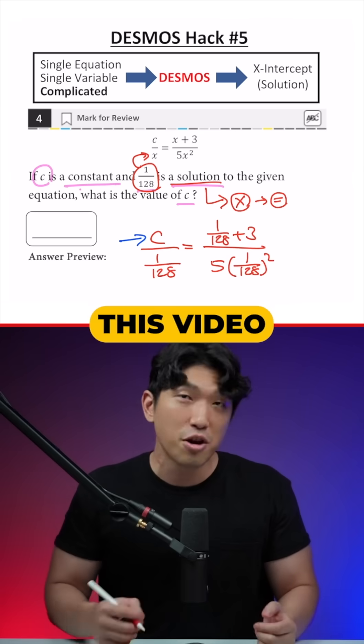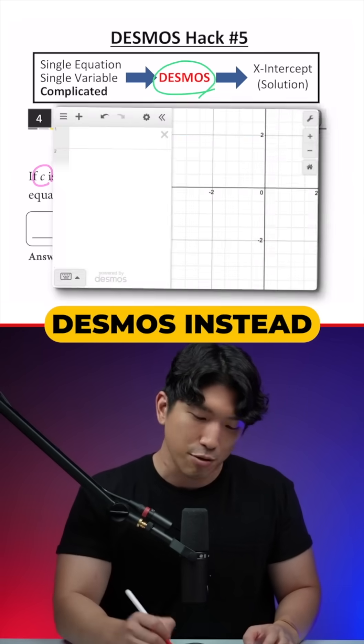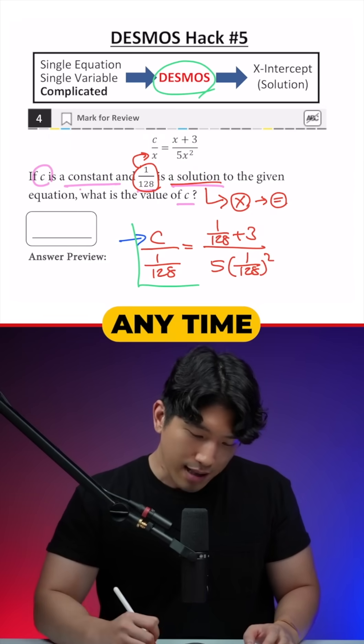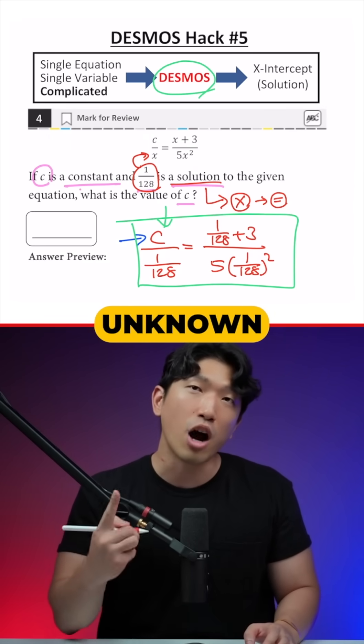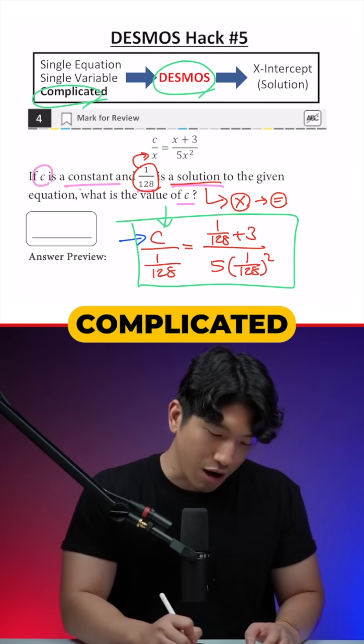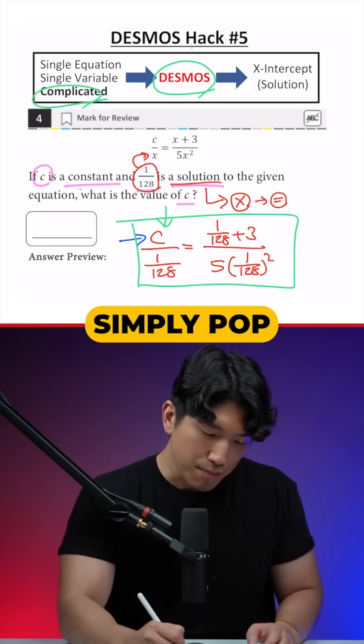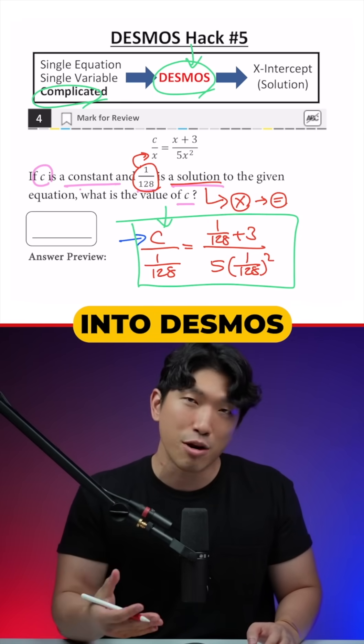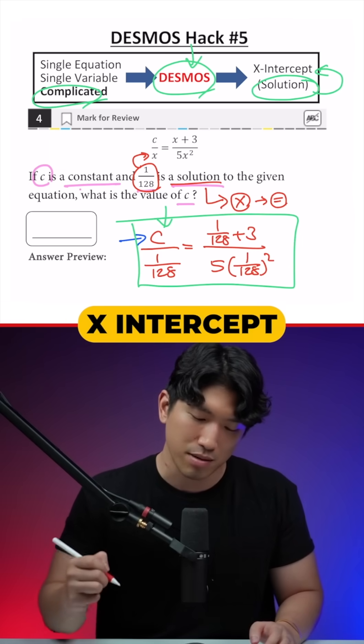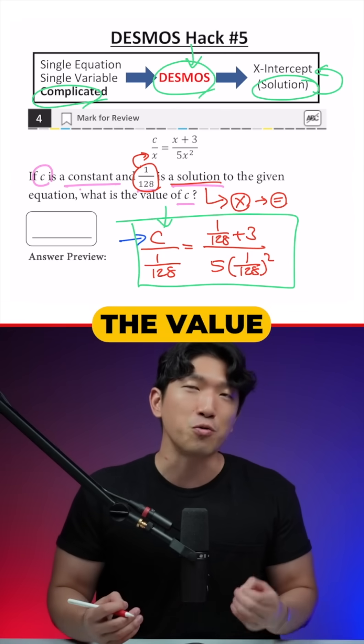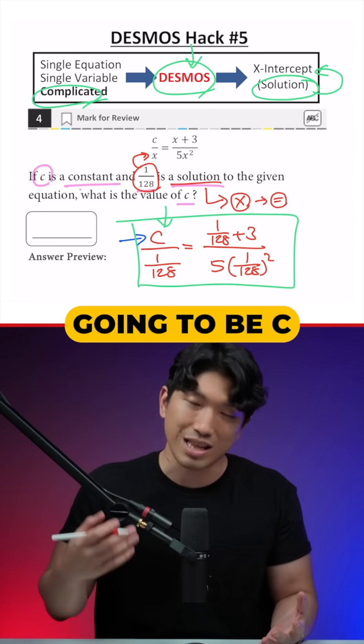But if you're watching this video, you are better than that because we are going to use Desmos instead. Because anytime you are working with a single equation with just one unknown variable and it looks very complicated, then you can simply pop the equation into Desmos and quickly find the solution by looking at the x-intercept. The x-intercept will show you the value you are looking for, which is going to be C.